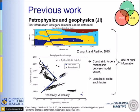Starting with previous work: this work was published in 2015 by Zangen-Rivill. They use geology as a source of prior information and discretize the different units into a given number — in this case, four units. Each of these units, numbered one through four, is subject to a petrophysical law that has to be honored during inversion. The idea is to honor geology while enforcing an empirical law between resistivity and density, while fitting the geophysical data, so that all three are honored.